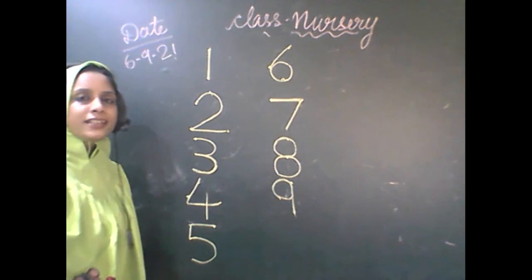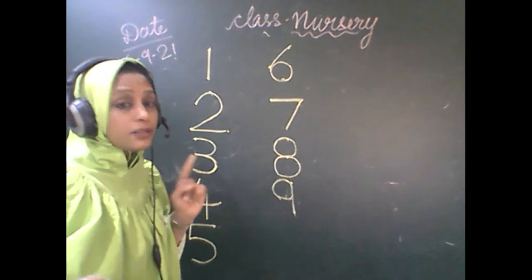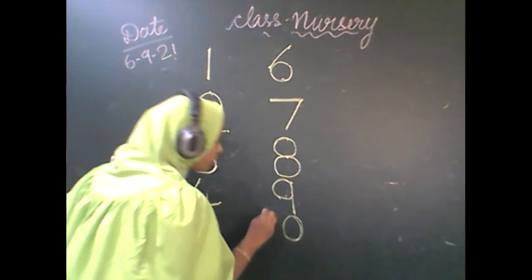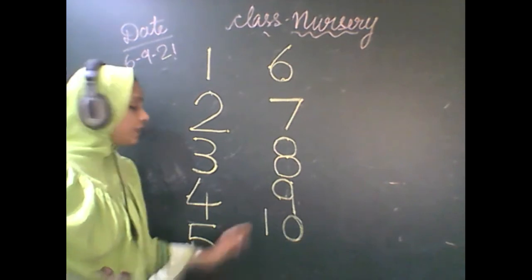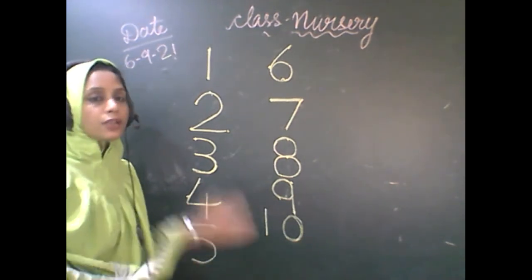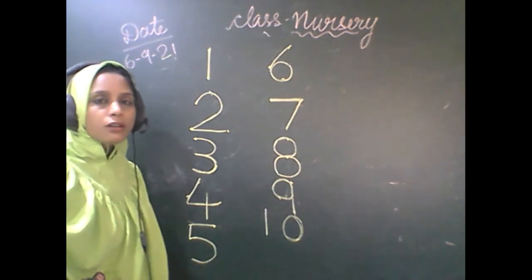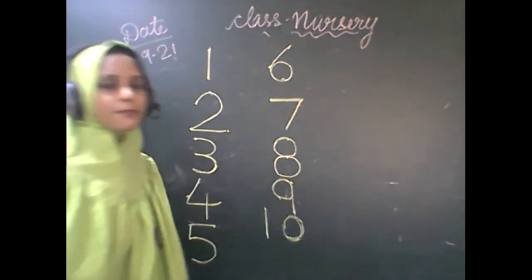And after nine, one zero ten. So parents, you remember zero below nine and one here. In this way, you have to write one zero ten. All the single digit numbers come over the zero, and one in the next box. One zero ten.